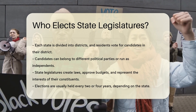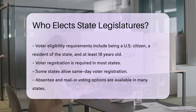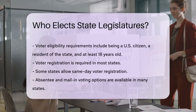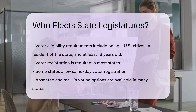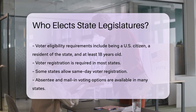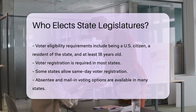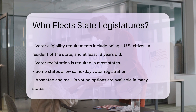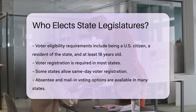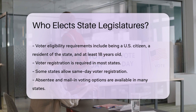Elections are usually held every two or four years, depending on the state. Voter eligibility requirements include being a U.S. citizen, a resident of the state, and at least 18 years old. Voter registration is required in most states, though some states allow same-day voter registration. Absentee and mail-in voting options are available in many states.